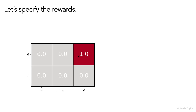And we also need to specify some rewards. So let's say that there will be a plus one reward given to the agent in state zero comma two. If at any point the agent finds himself in location zero two, then we give him the plus one reward, and in any other state he receives a zero reward.